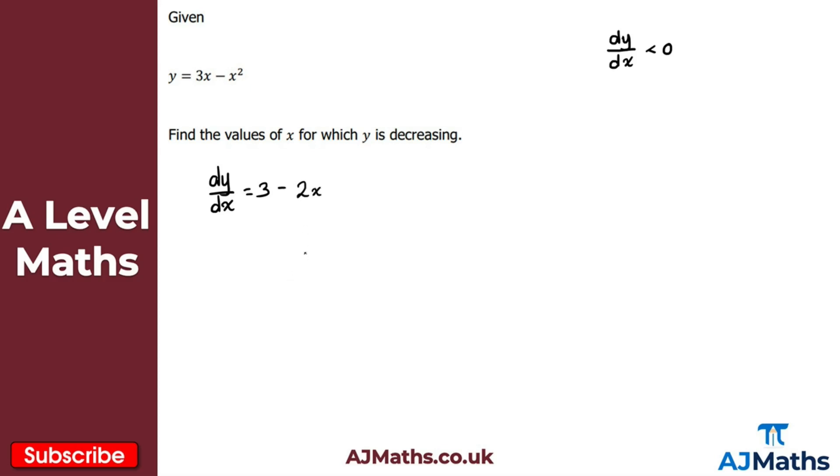Well, we're looking for when this is now less than zero, because we're looking for when y is decreasing. So 3 minus 2x is less than zero.